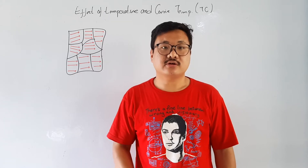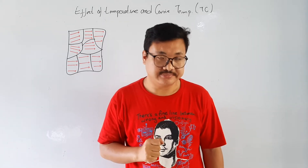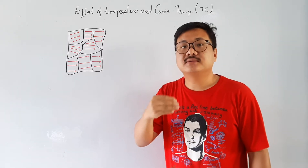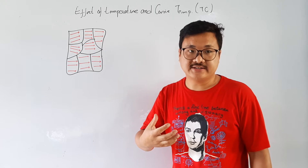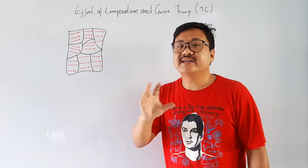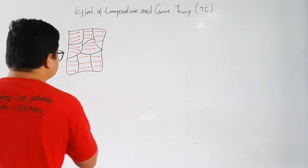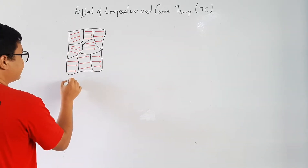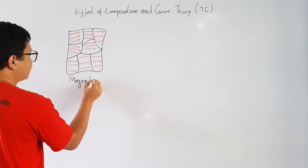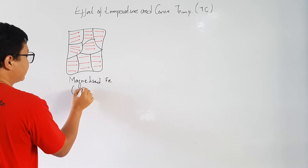Effect of temperature on magnetization and the Curie temperature. Let us see what will happen to a fully magnetized material or a bar magnet when we heat that element. For example, let us consider a magnetized iron — magnetized iron, or simply we can call this as a magnet.